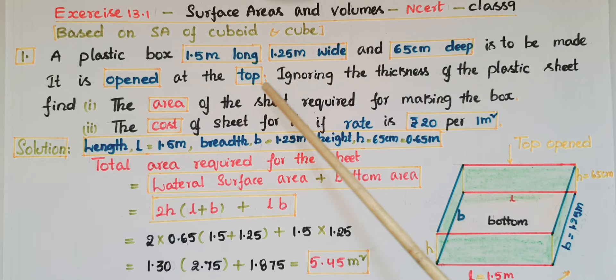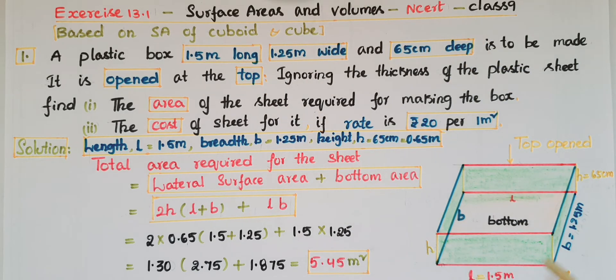It is opened at the top, so this is the plastic box here. Length is 1.5 meters, this is the breadth, and this is the height. So these three values are given and it is open at the top. This box is open at the top. Ignoring the thickness of the plastic sheet: